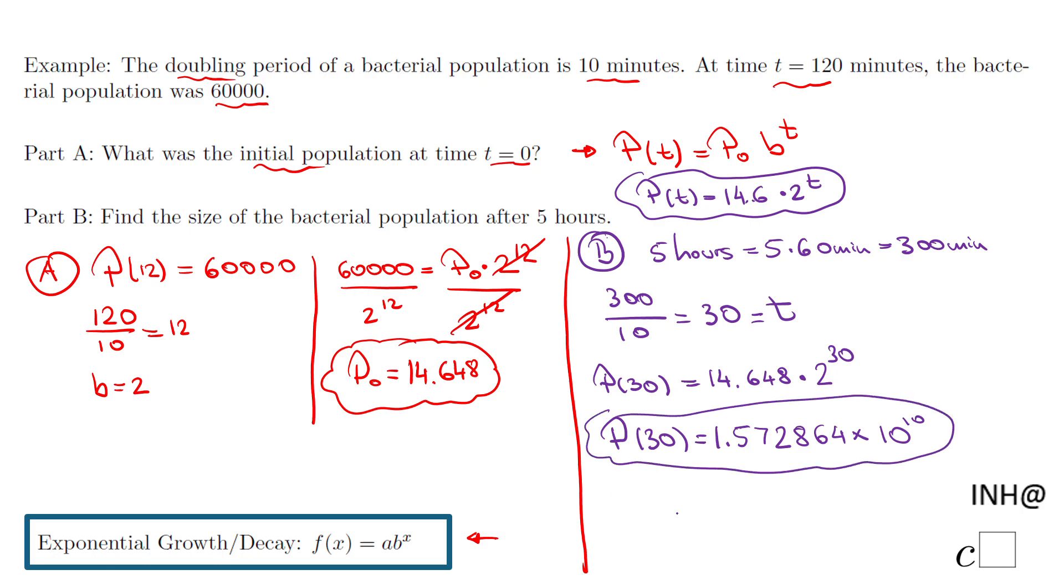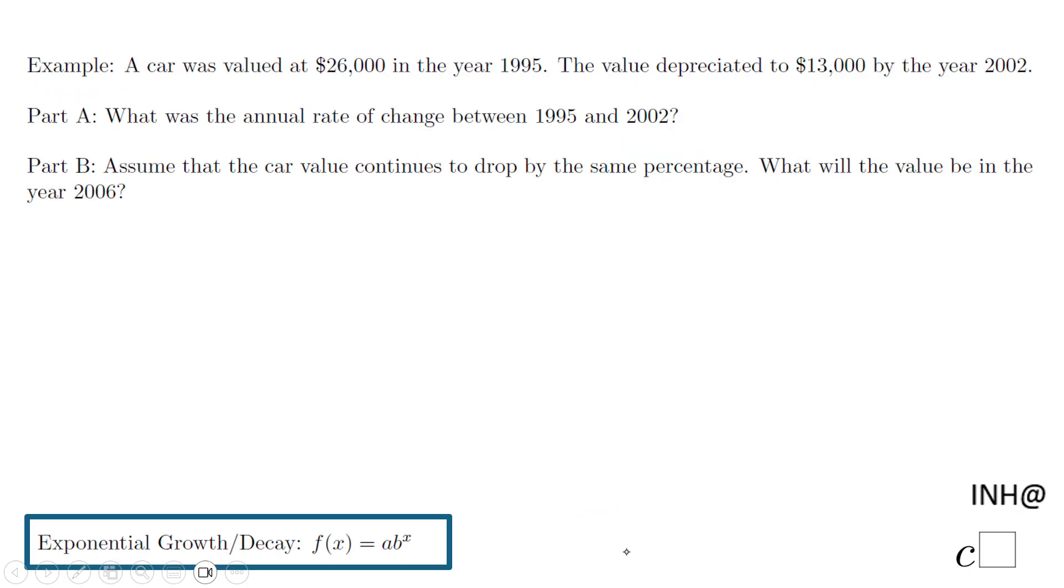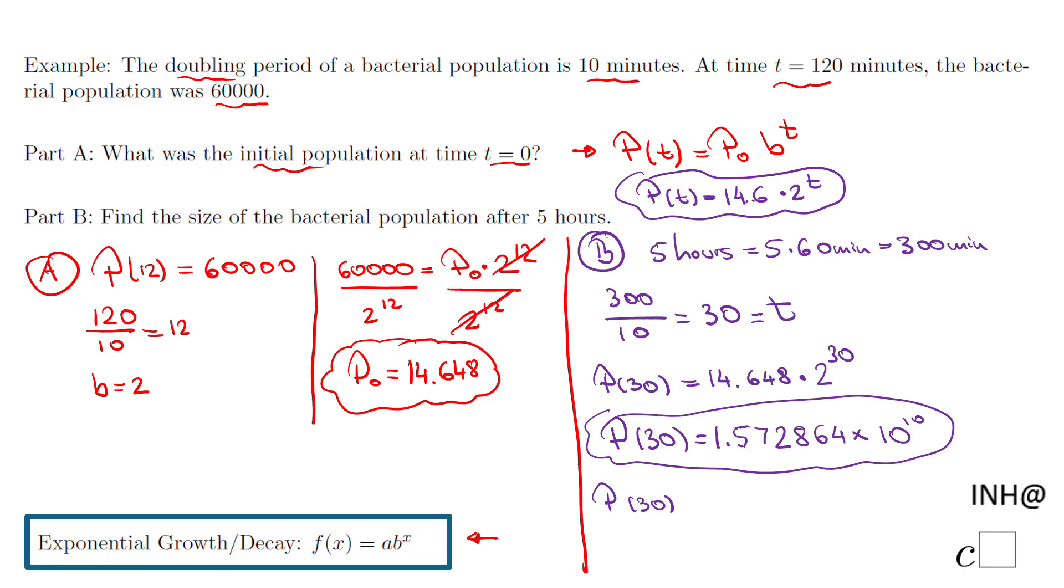standard form. You move the decimal point 10 spots to the right: 1, 5, 7, 2, 8, 6, 4, 0, 0, 0. Of course, if you have a better calculator or a different mode, you can do that and get the